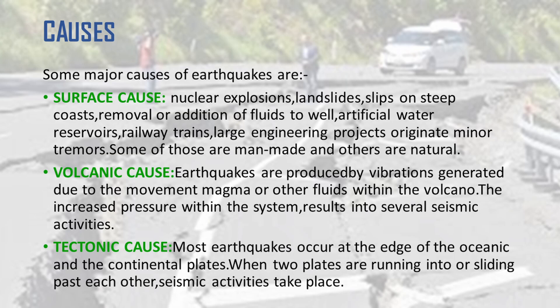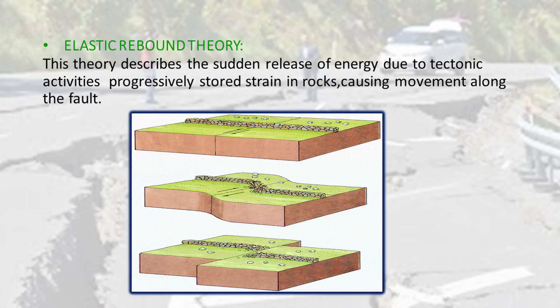The most important cause is tectonic cause. The earth's crust is made up of several pieces called plates. The plates are three types: convergent, divergent, and transform. When two plates are running into or sliding past each other, seismic activities take place. This is explained by a well-known theory by Harry Fielding Reid called the elastic rebound theory. Here we can see in the image how stress, then strain, then energy release caused the earthquake.